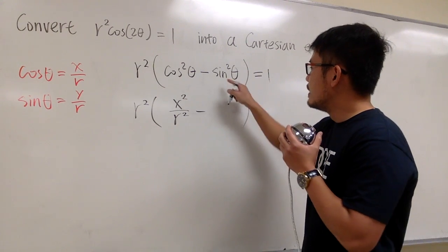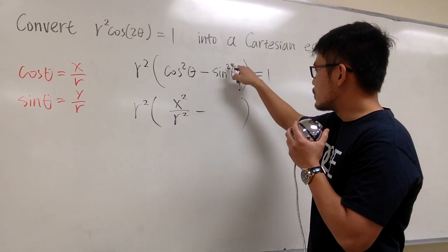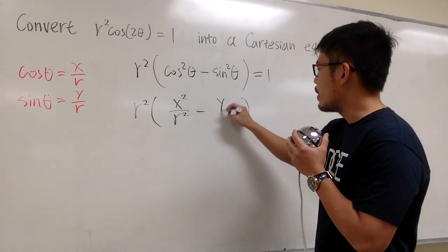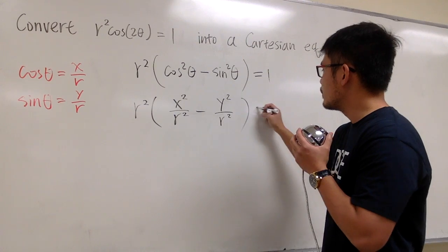And then minus, same thing. Sine squared theta, look at this, square both sides. So we have y squared over r squared, which is equal to 1.